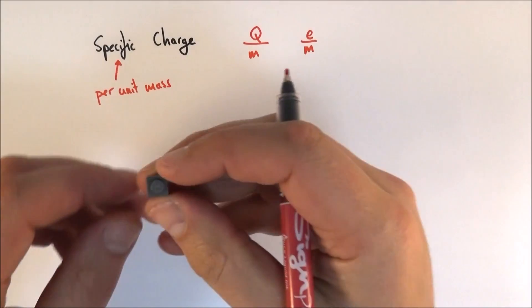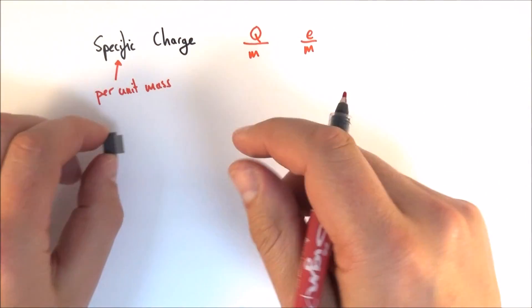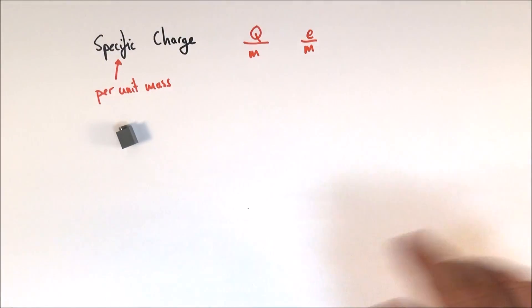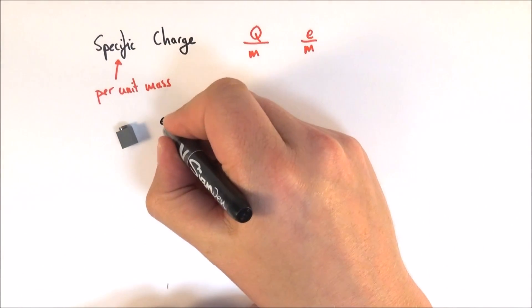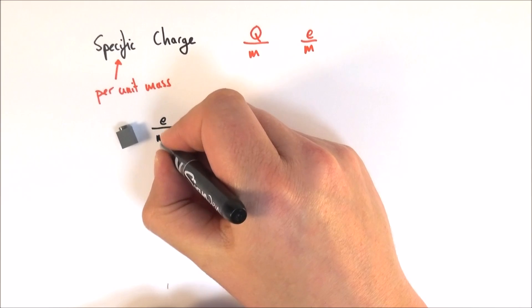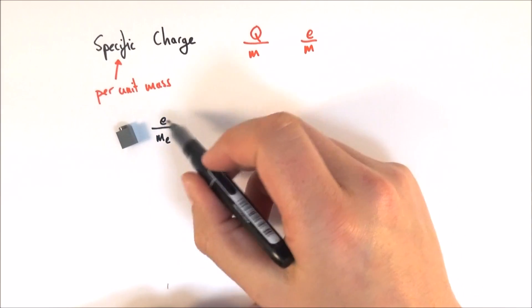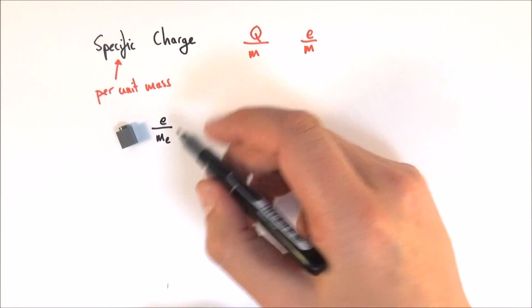So for example, if you had something like an electron to work out the specific charge on an electron, you can basically look at its charge which is e divided by the rest mass of the electron. These two things are often given to you in your data book.